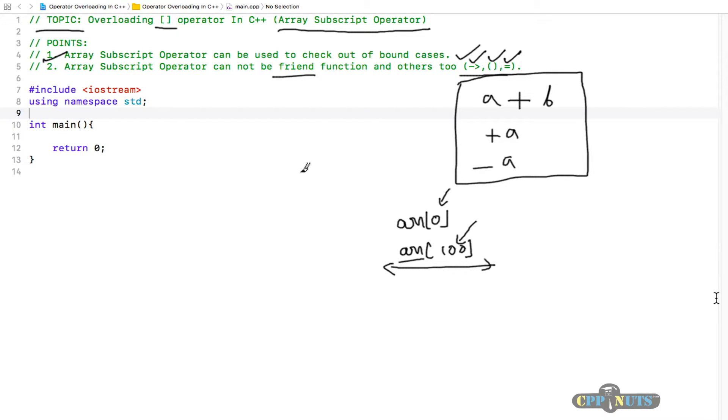You can declare a function as friend in your class and start using that, but not these overloaded functions. The subscript, arrow, function call, and assignment operators - these four operators collectively cannot be overloaded using friends.